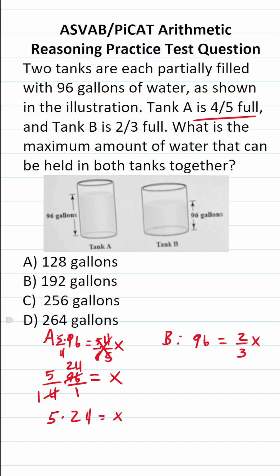If you can't do that mentally, do it off to the side. We have 24 times five. Four times five is 20, bring down a zero, carry a two. Five times two is 10, plus two is 12. So we can see X in this case is 120. That means tank A can hold 120 gallons of water.